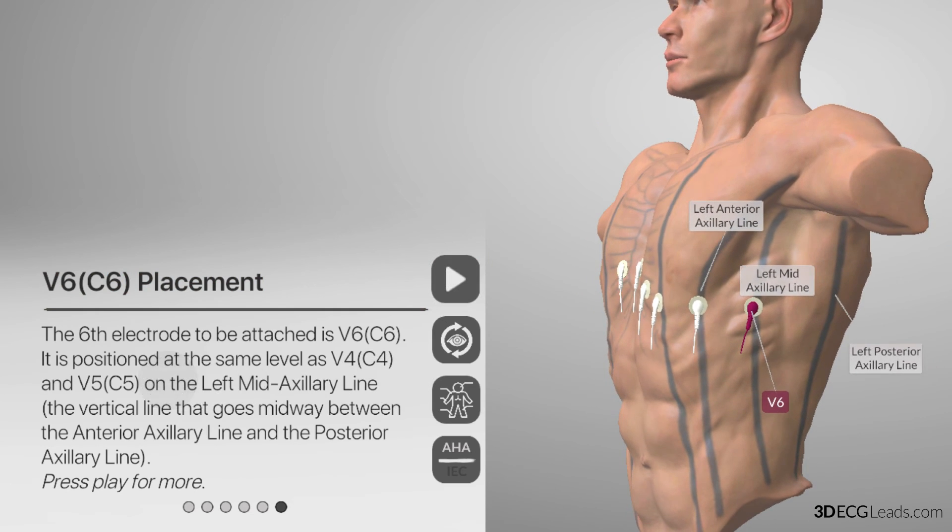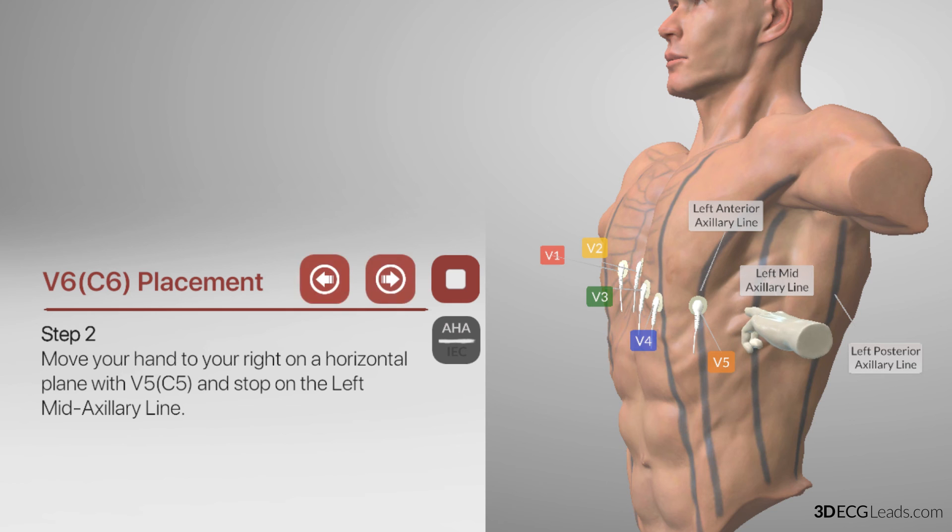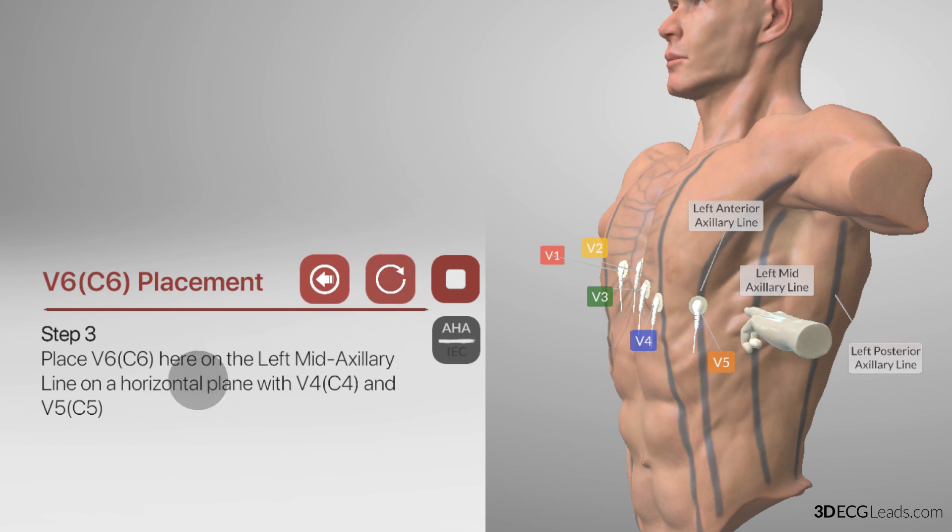The last electrode to be placed is V6. V6 is placed on a horizontal line at the same level with V5 and V4 on the left mid-axillary line. The mid-axillary line is this line here that goes through the center of the armpit. Let's continue. Press play to view V6 placement technique. Locate V5. When you have identified V5, move your hand to the right on a horizontal plane with V4 and V5, then stop on the left mid-axillary line. Place V6 here.